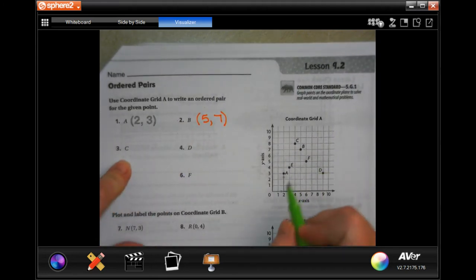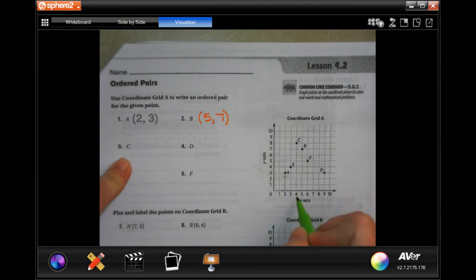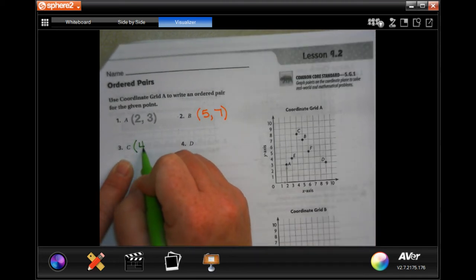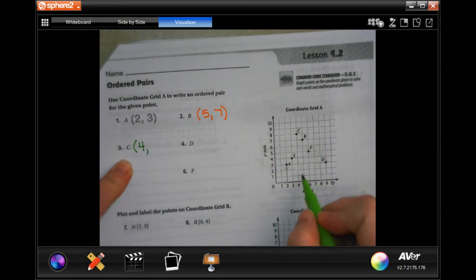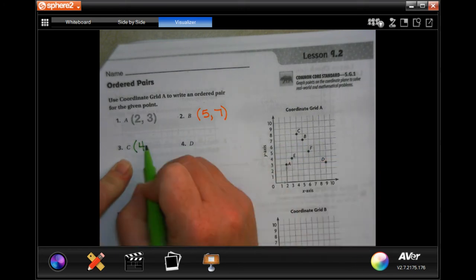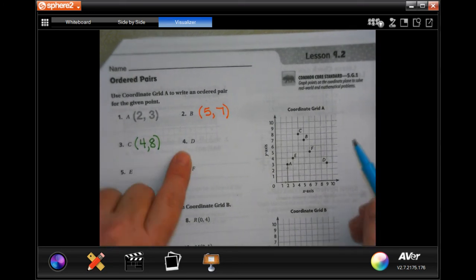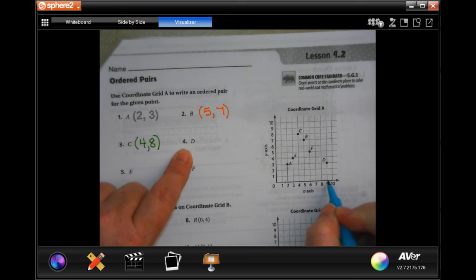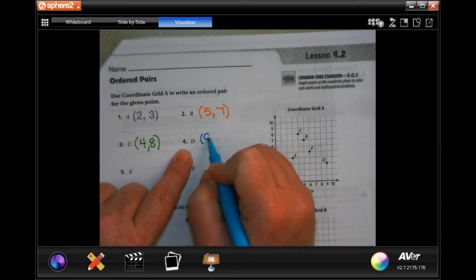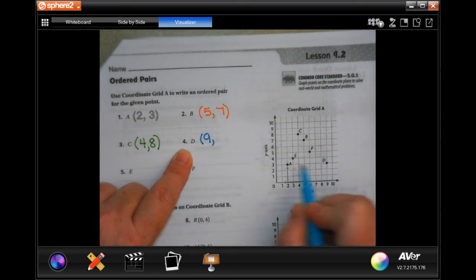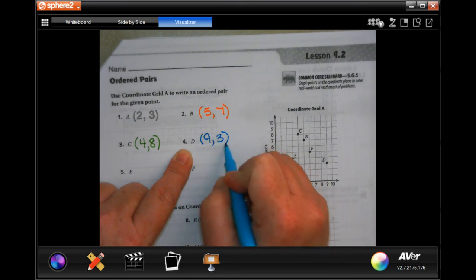C, we went over to four, and up eight. Really easy, guys, once you get used to it. For D, we went over nine and up three.